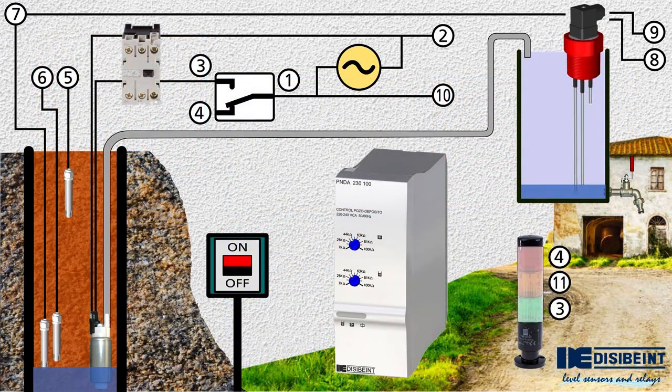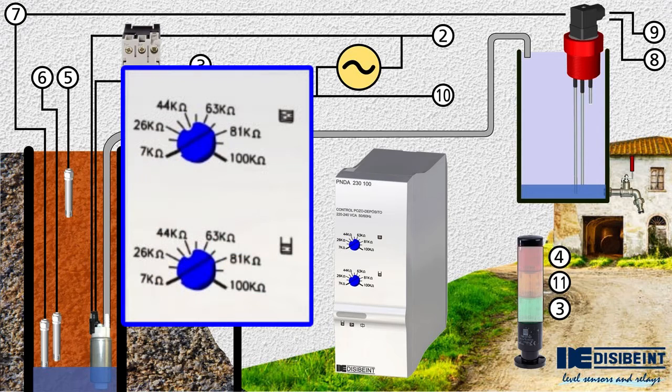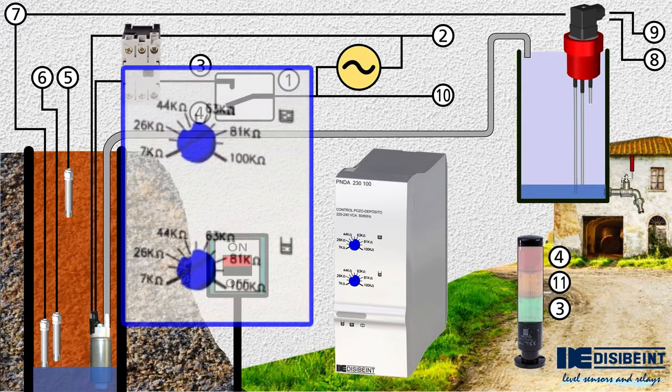The measurement range of the PNDA relay covers practically all of this type of water. Using the buttons located on the front, we adjust the value from which it will act when the liquid is not detected, both for the well and for the tank.